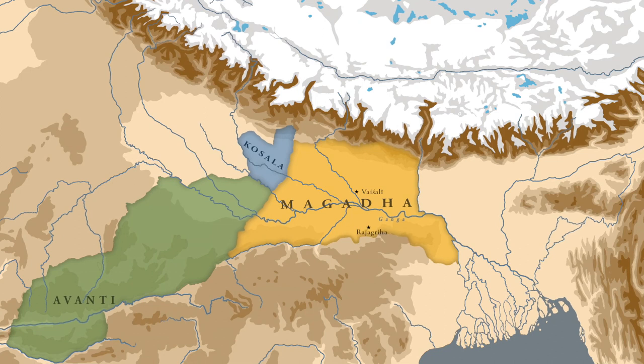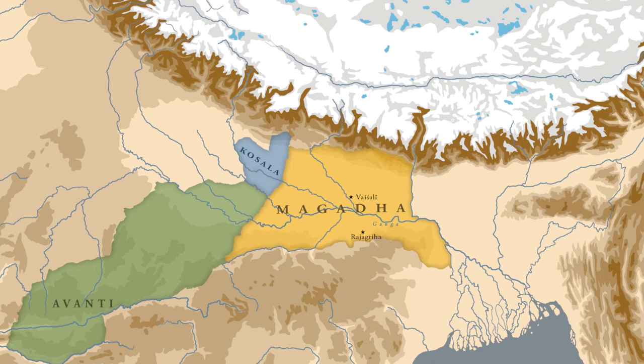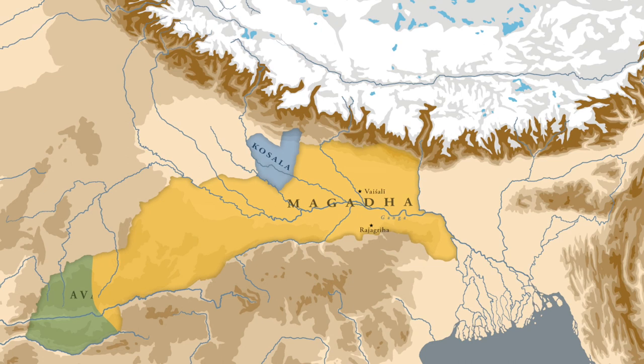Vaishali, on the other hand, was situated on the other side of the Ganga and provided a strategic depth which Rajgriha lacked. We do not have much evidence of how the war between Magadha and Avanti unfolded, but we do know that by the end of Shishunaga's reign, he was able to conquer the Mahajanapada of Avanti. Having conquered Avanti, Magadha now became the preeminent power in northern India.